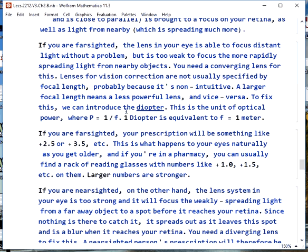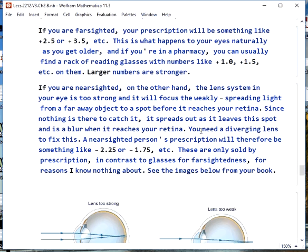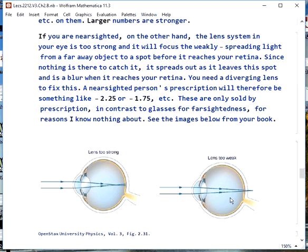The lenses aren't really specified by focal length for eyeglasses, and the reason is it's not a very intuitive system. Larger focal length is a less powerful lens. So, in the eyeglass world, they use optical power, which is the reciprocal of focal length, and the unit of that is called the diopter, where one diopter is a focal length of one meter. If you're far-sighted, you'll have a prescription something like plus one, plus two, plus three. This happens to your eyes naturally as you age, and if you're in a pharmacy sometime, there's usually a rack of reading glasses that have numbers like this printed on them, and larger numbers are stronger. Here's a picture of what happens to a far-sighted eye. You can focus the light to a point, but it would only happen behind your retina. It's still a blur here.